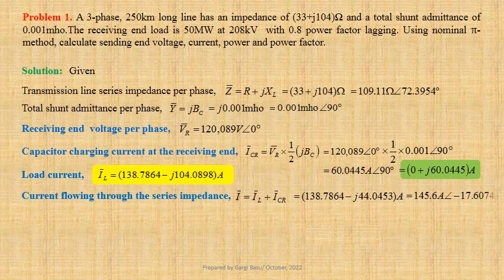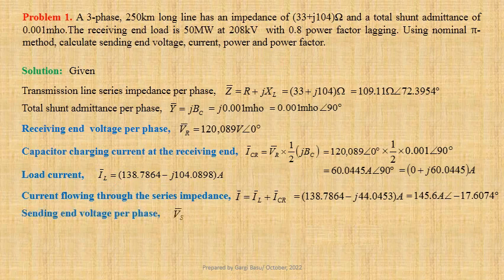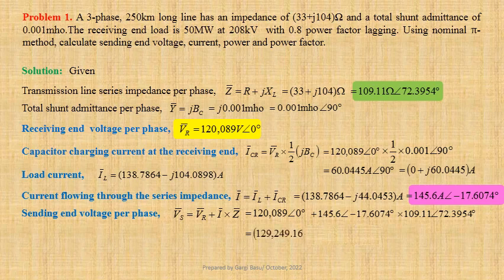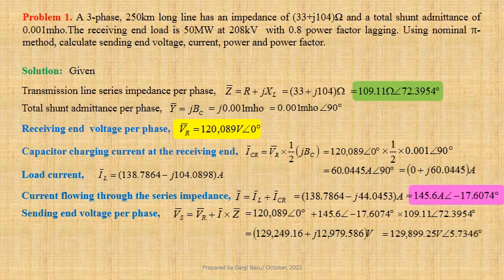Now we shall compute sending-end voltage per phase. VS equals Vr + I × Z. Using values we get 120,089 ∠ 0° plus 145.6 ∠ −17.6074° × 109.11 ∠ 72.3954°. That gives us 129,249.16 + j12,979.586 volts, which may be written in polar form as 129,899.25 volts ∠ 5.7346°.